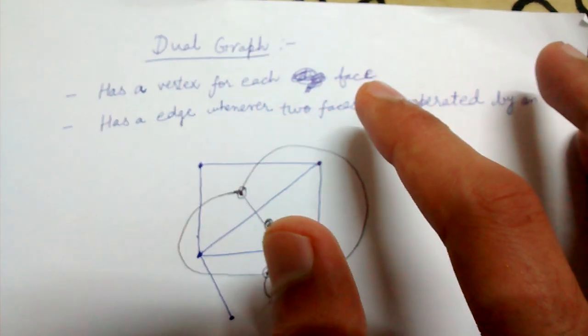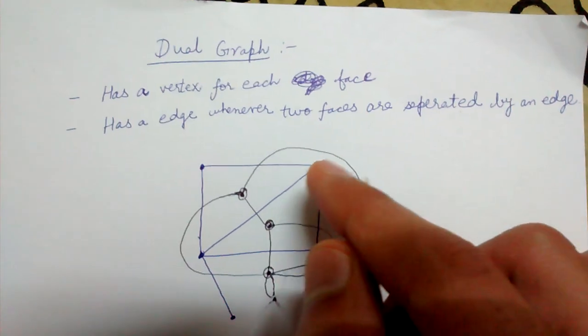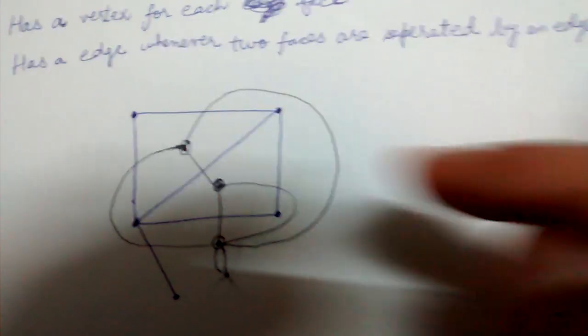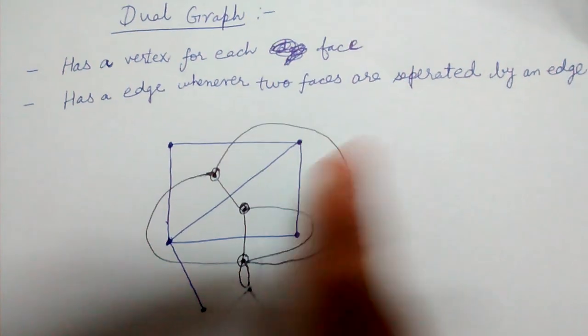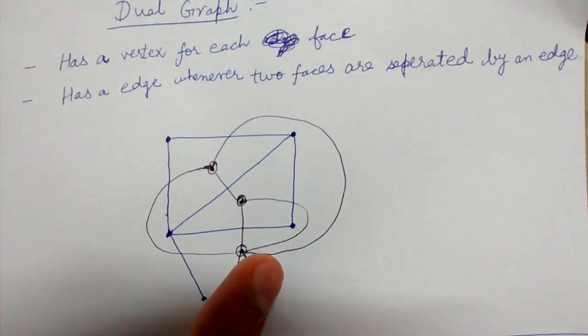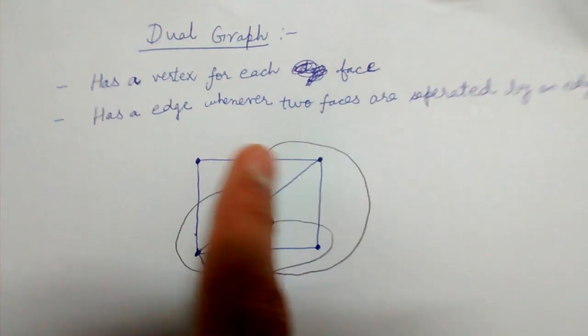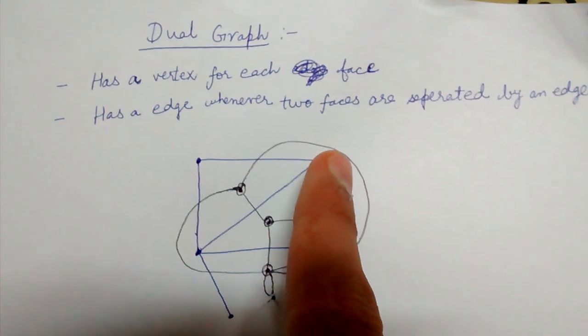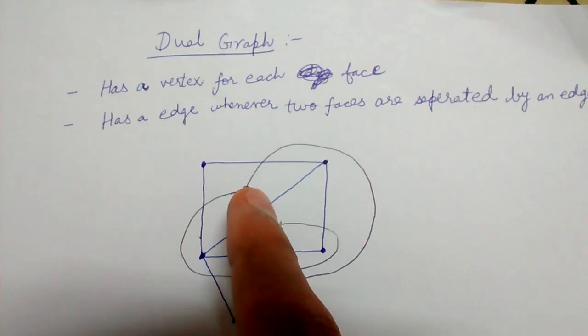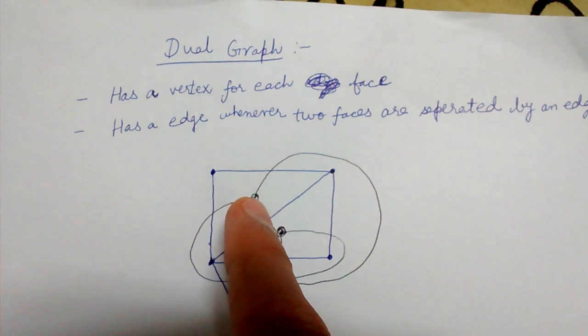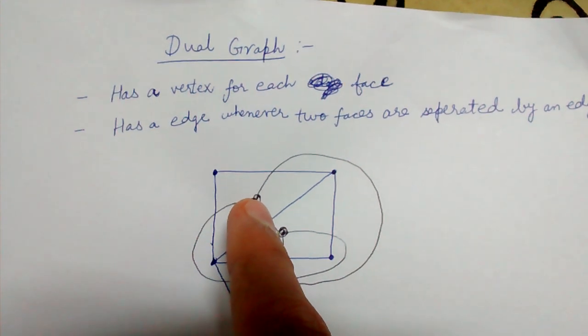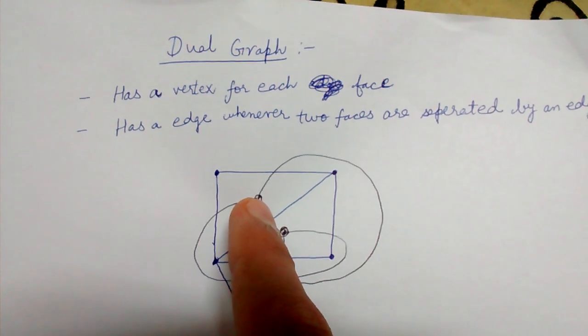It has a vertex for each face. The blue one is our given graph and the black one is the dual graph of it. So for this face, this triangular face we have created one vertex, this one.